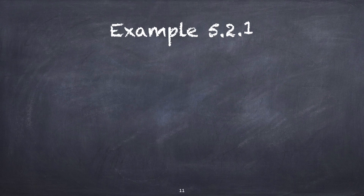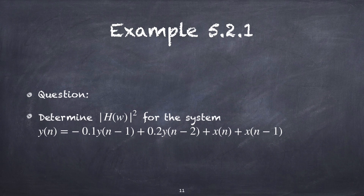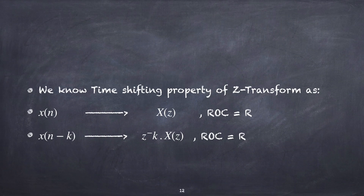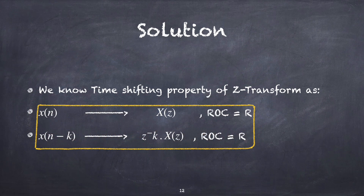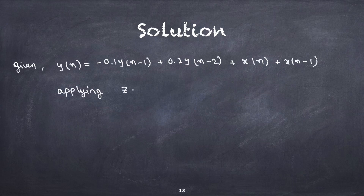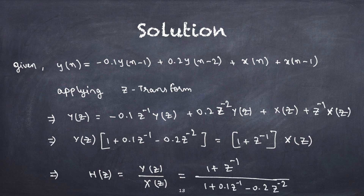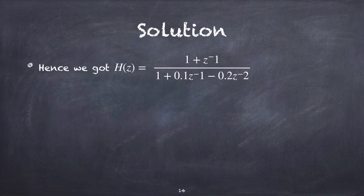We have successfully solved example 5.1.5 and seen its MATLAB execution. Now let's solve example 5.2.1. Here, a difference equation of the system is given and we are asked to compute |H(ω)|². To solve this, we need the time-shifting property of the Z-transform. Applying the Z-transform to the given difference equation and solving, we get H(z) as shown. To calculate H(ω) from H(z), we first check whether the DTFT of h(n) exists, which requires the ROC of H(z) to contain the unit circle.